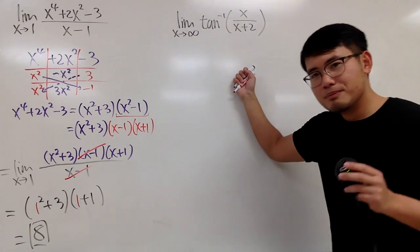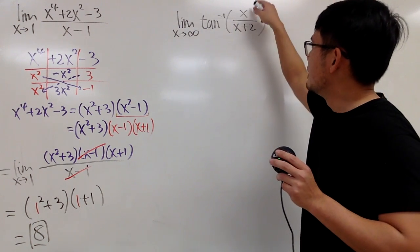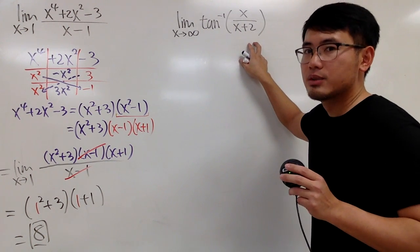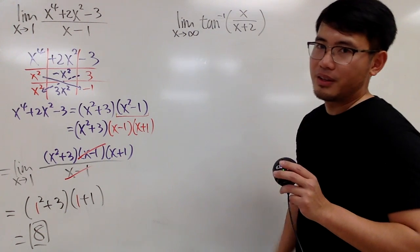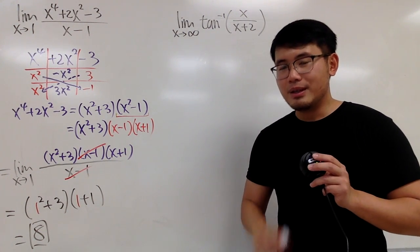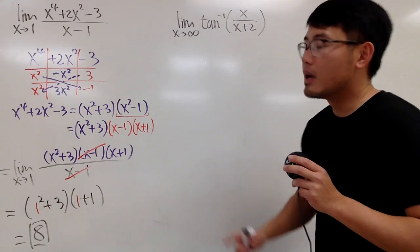All right. Anyway. Now, the limit as x approaching to infinity. Inverse tangent of x over x plus 2. If you put infinity right here and here, you get infinity over infinity. Right? You have to do this one legitimately. So, what we do is actually the following.